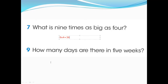How many days are there in five weeks? First, in one week there are seven days. In five weeks it's simply seven multiplied by five — that means seven days, five times: one week, two weeks, three weeks, four weeks, five weeks. Seven multiplied by five equals 35. So there are 35 days in five weeks.